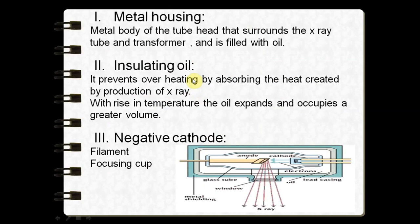The metal housing — the blue outline you see enclosing the x-ray tube — helps to surround the x-ray tube and the transformer, protects the x-ray tube, and grounds the high voltage component. The insulating oil, as the name suggests, maintains the insulation properties of the glass envelope and also insulates the tube from the metal shield.